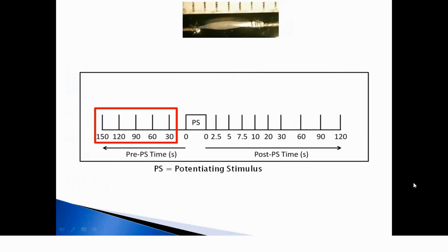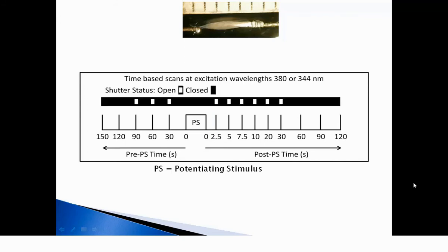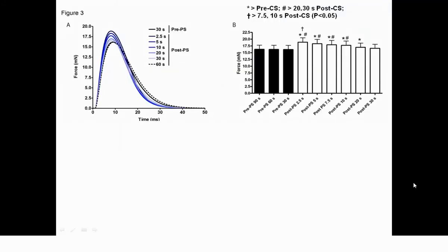The muscle was then subjected to a sequence of control twitches occurring every 30 seconds, followed by a potentiation-inducing stimulus of 20 hertz for two and a half seconds. Potentiated twitches were then measured at select time points after the end of the potentiation-inducing stimulus. To determine what was happening to the cytosolic calcium concentration during the contractions, fluorescent light signals were collected before and after the potentiating stimulus.